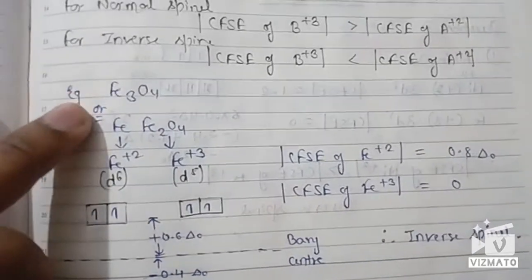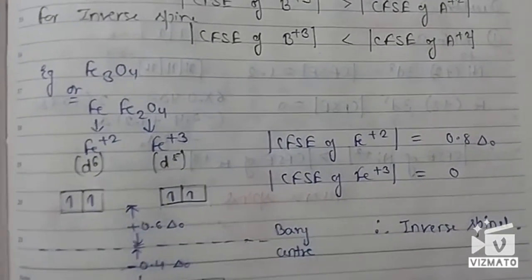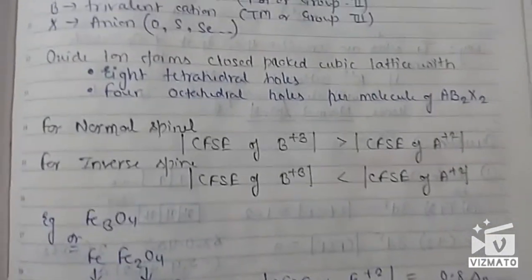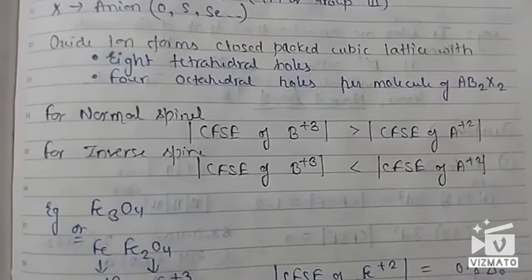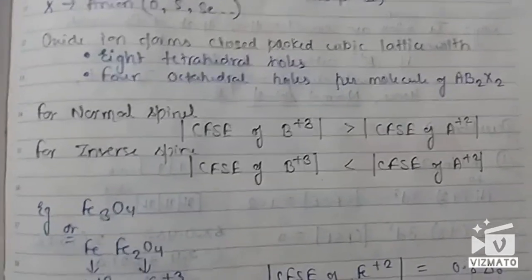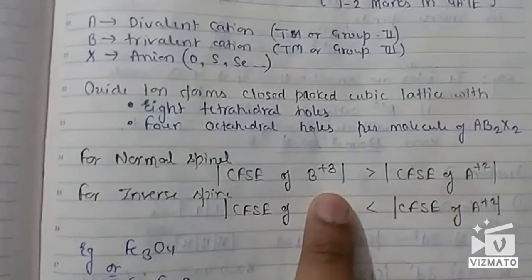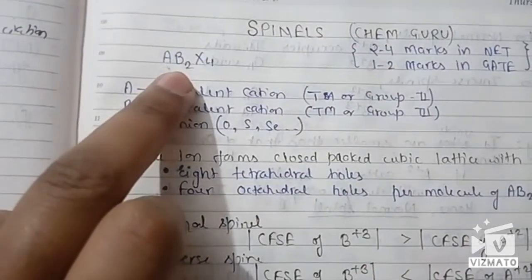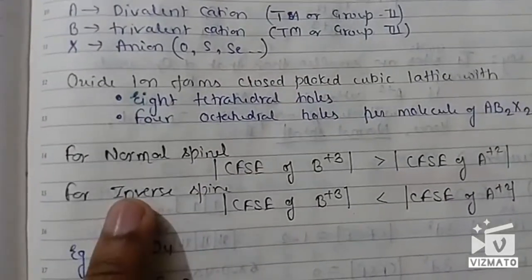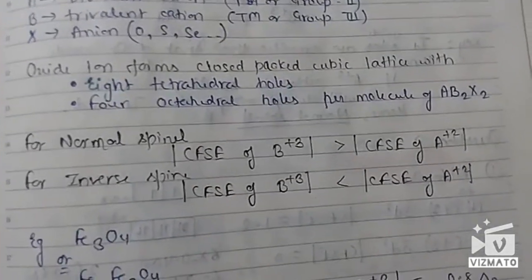Given a formula like Fe₃O₄, we will be asked in the examination whether it is an inverse spinel or a normal spinel. For that purpose, you need to find the CFSE. If the CFSE for the +3 cation — B is the +3 and A is the divalent cation — is greater, then this is a normal spinel.